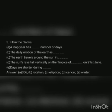Fill in the blanks. A leap year has blank number of days. Its answer is 366 days. The second: The daily motion of the Earth is blank. Its answer is rotation. C: The Earth travels around the sun in blank. Its answer is elliptical.